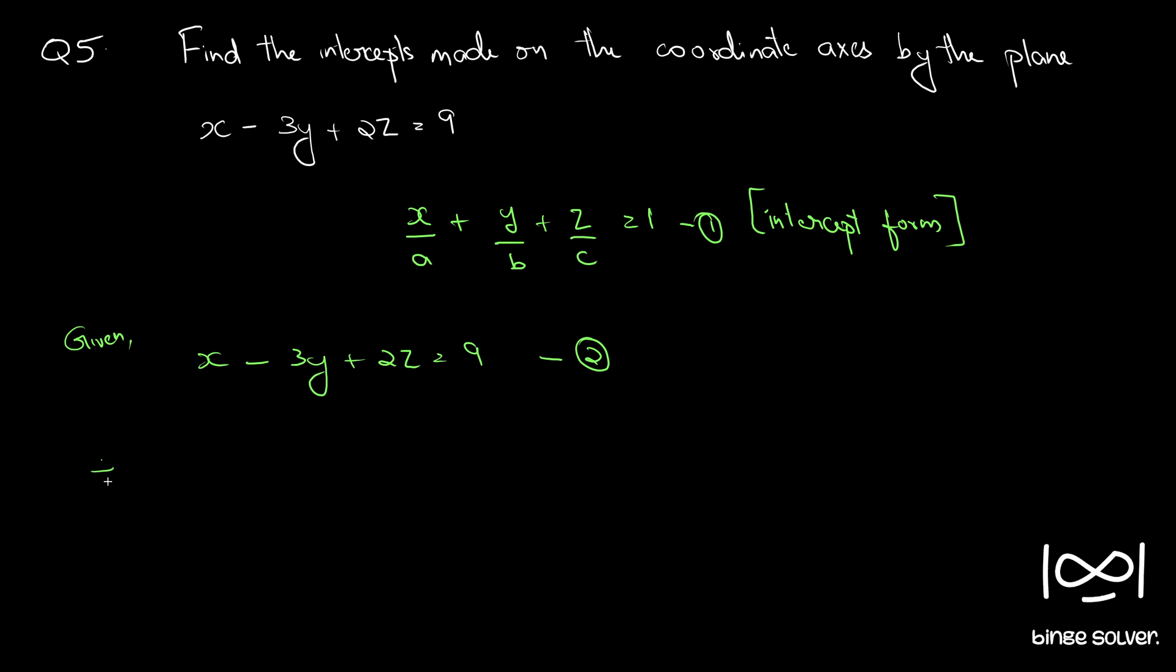Now, dividing by 9, we have x by 9 minus y by 3 plus z by 9 by 2 equal to 1. This is the equation.